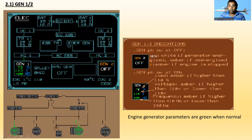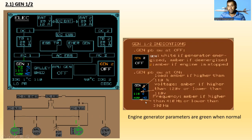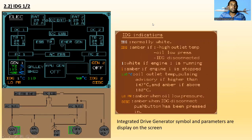With the generator push button switch at ON, the load — showing 72% — becomes amber if higher than 110%. The voltage becomes amber if higher than 120 volts or lower than 110 volts. The frequency becomes amber if higher than 410 hertz or lower than 390 hertz.